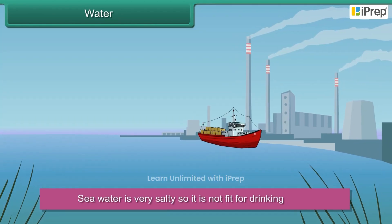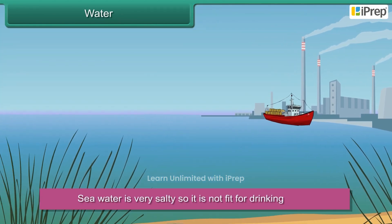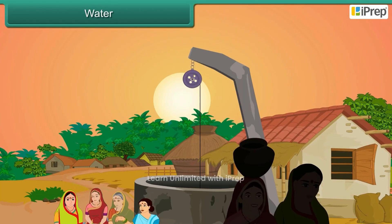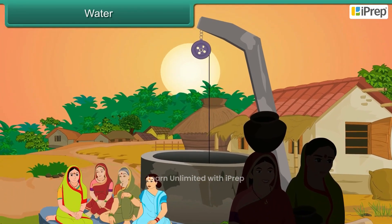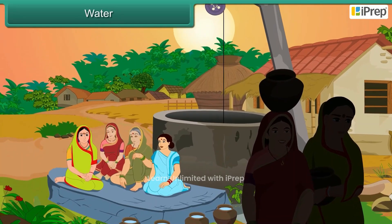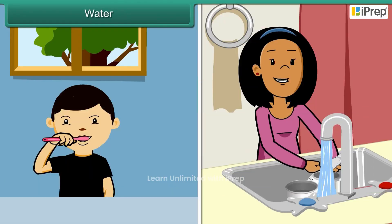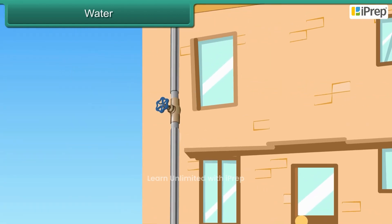Sea water is very salty, so it is not fit for drinking. In villages, people dig wells to draw the underground water. In cities, water reaches our houses through underground pipes.